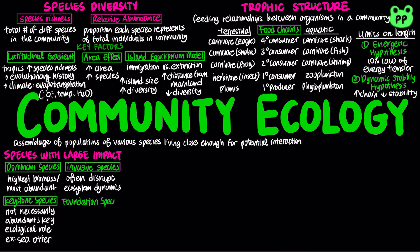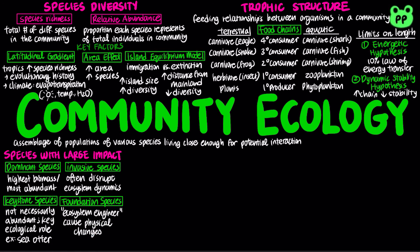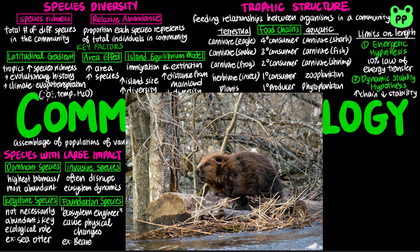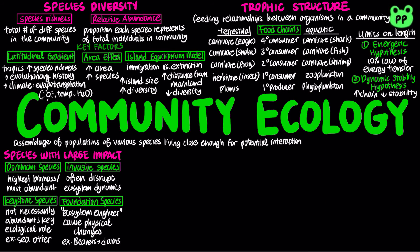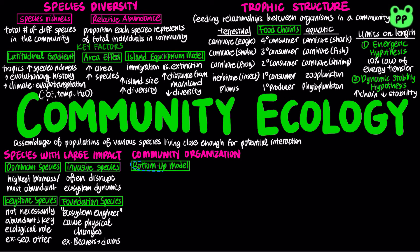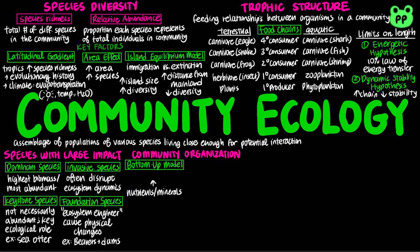Foundation species are ecosystem engineers that cause physical changes in the environment that affect community structure. For example, beaver dams can transform landscapes on a very large scale. The bottom-up model proposes a unidirectional influence from lower to higher trophic levels. For example, the presence or absence of mineral nutrients determines community structure, including the abundance of primary producers.